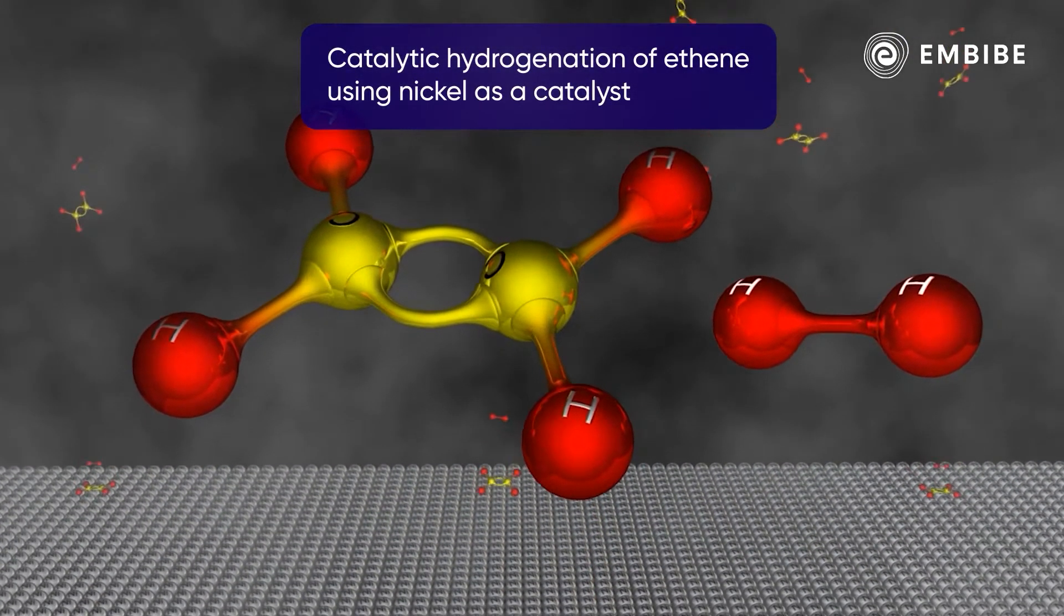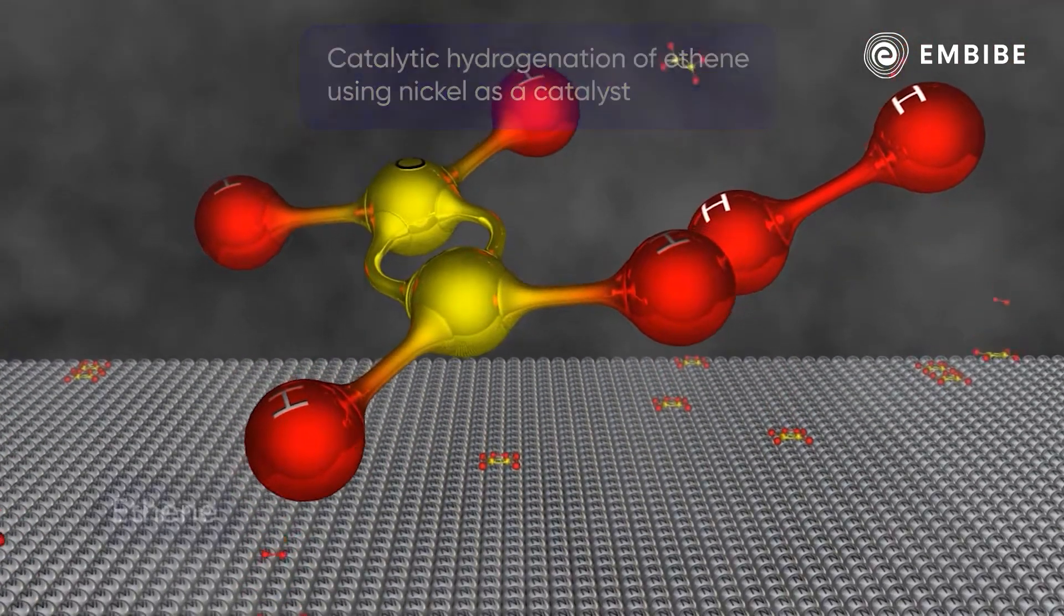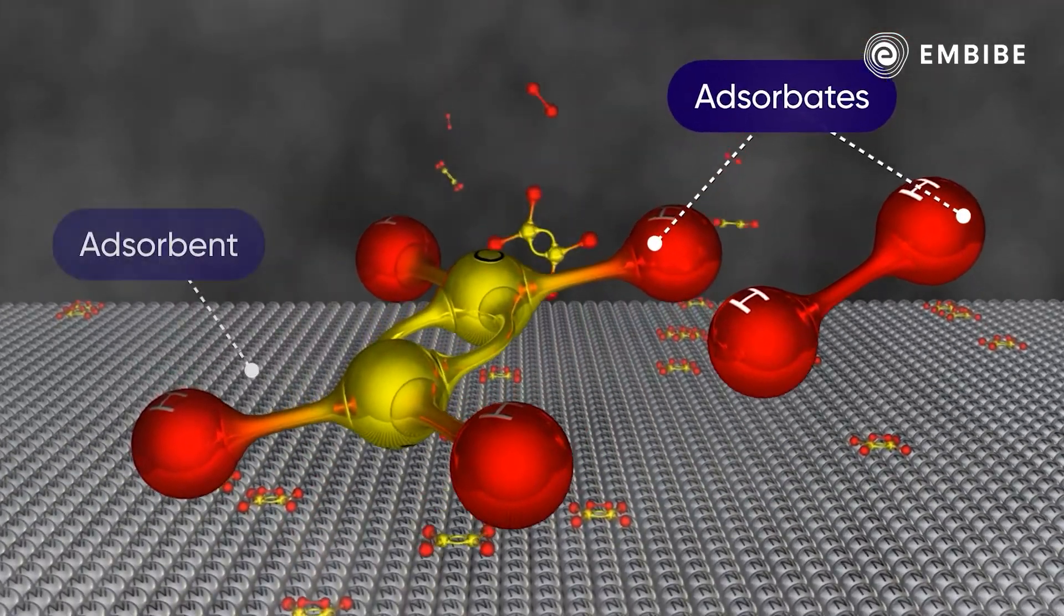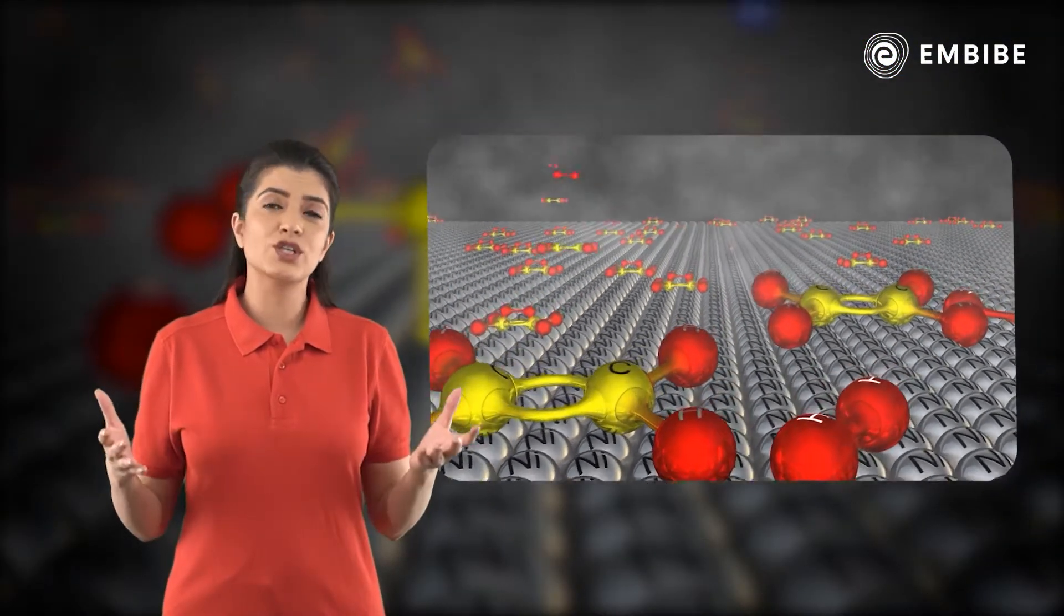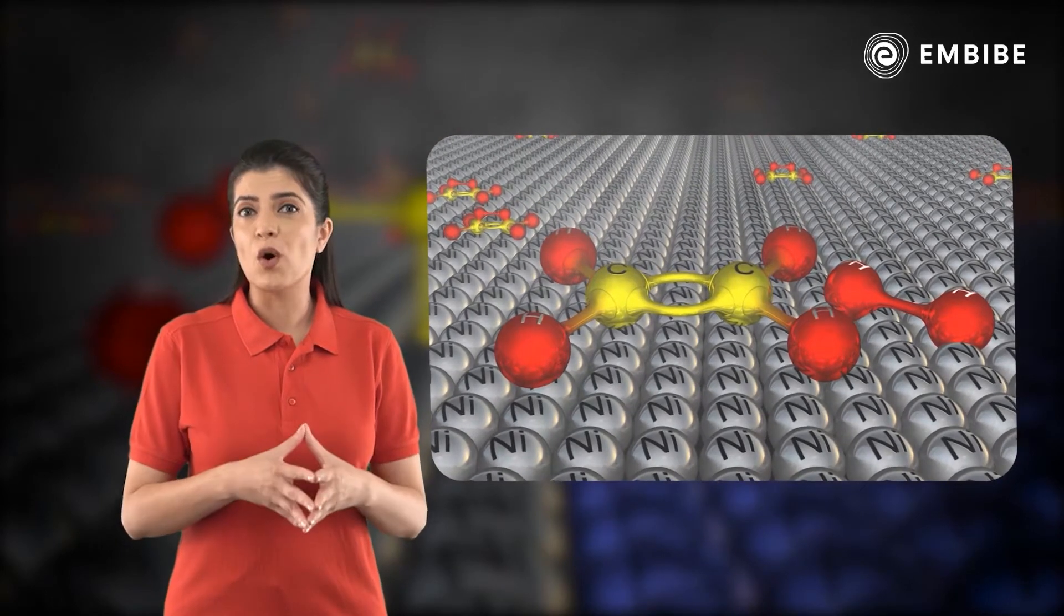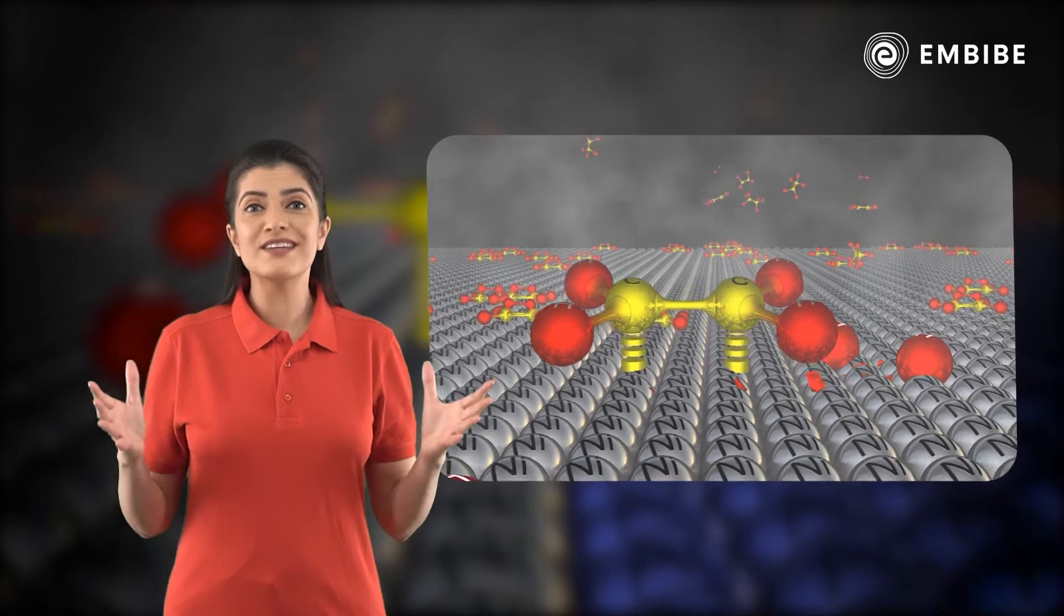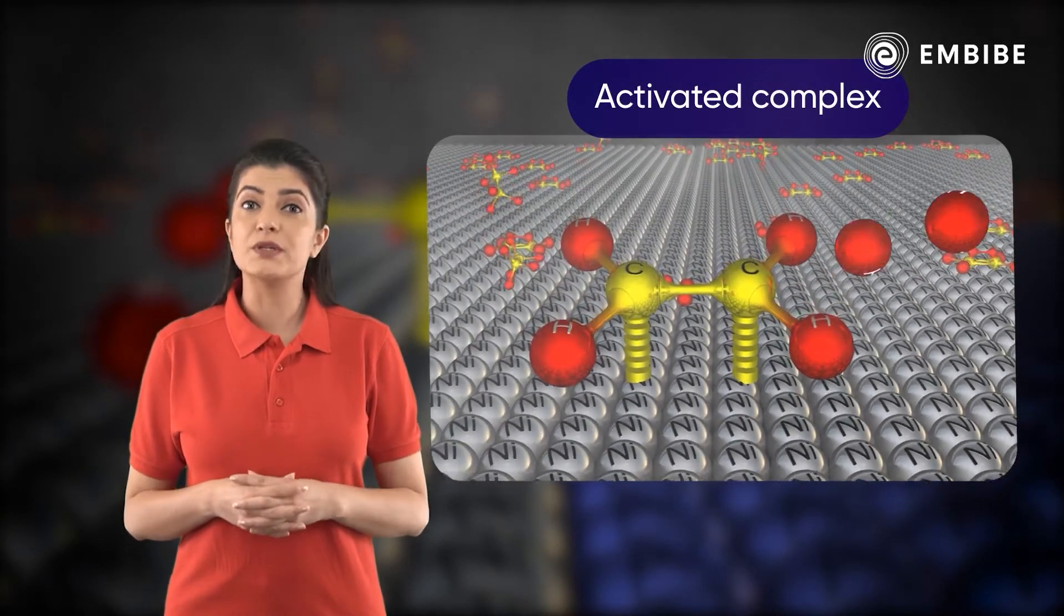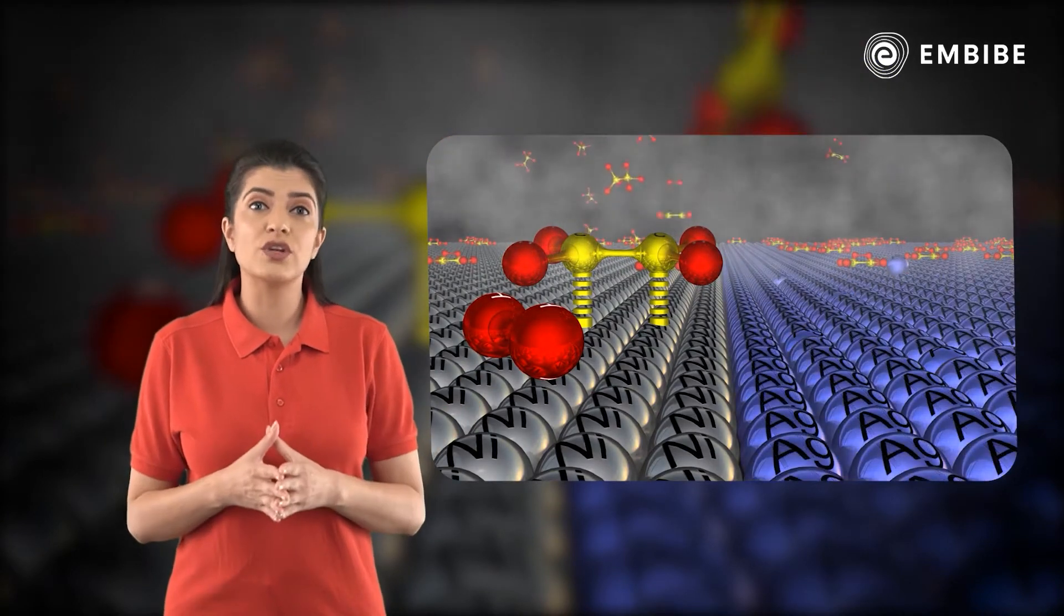Here, ethene and hydrogen gas are adsorbates and nickel is the adsorbent. As ethene and hydrogen gas are adsorbed on the surface of nickel, they form bonds with the nickel catalyst. This bonding results in the formation of an activated complex between nickel and ethene.